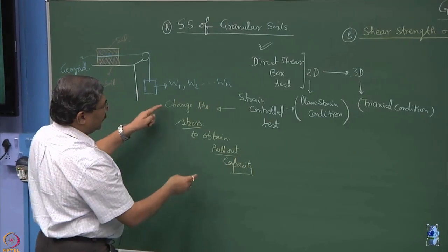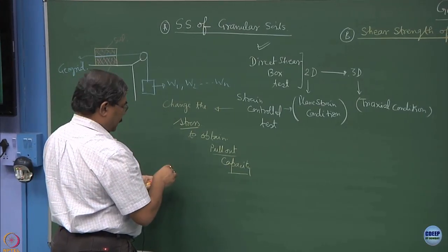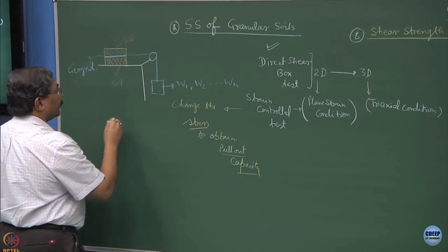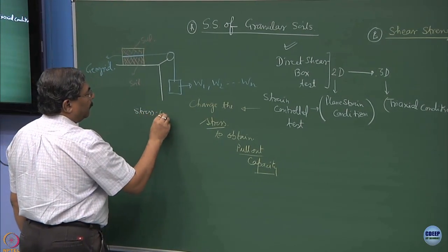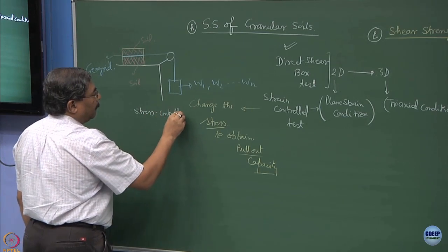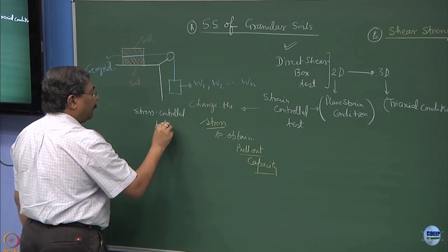This is a typical test which we can utilize the direct shear box setup to obtain the pull out capacity. We can know what is the friction getting mobilized at the interface of the geogrids or for that matter any type of inclusions. So this becomes a constant stress test, stress control test.